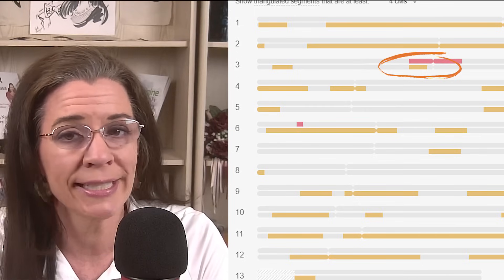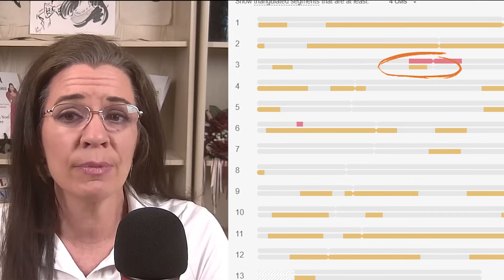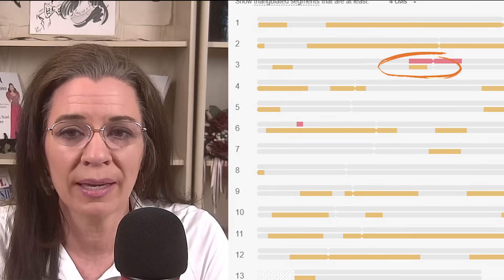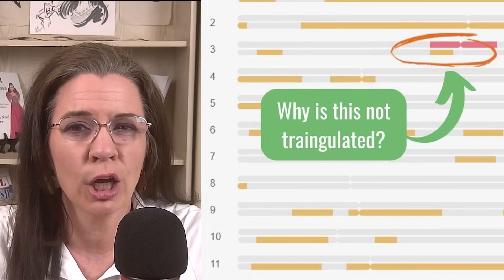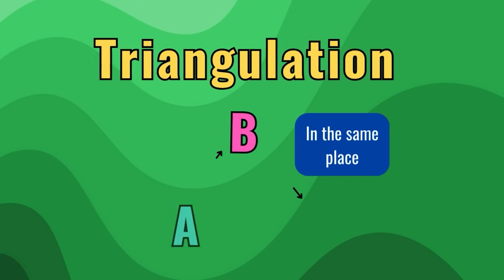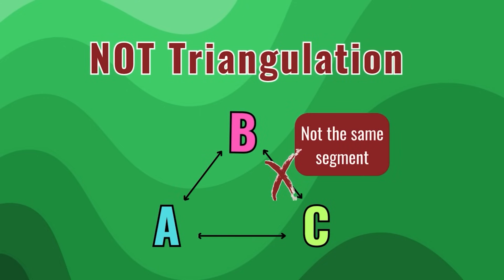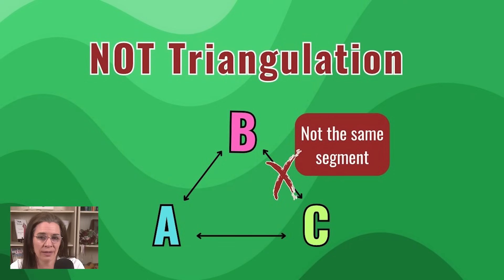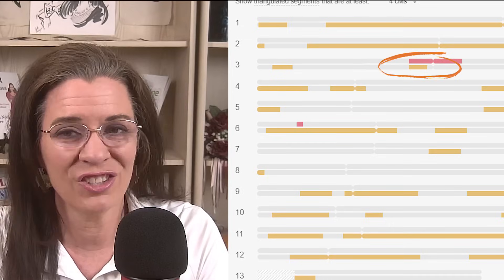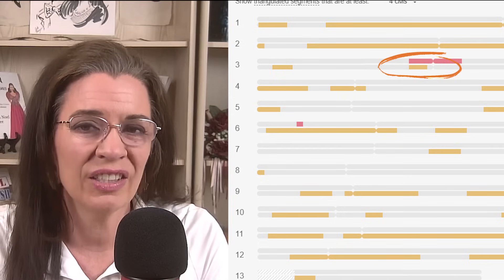Here's something that trips up a lot of people. You might open the chromosome browser, compare yourself to two matches, and see three colored bars stacked right on top of each other — same chromosome, same spot — and think this has to be a triangulated segment. But triangulation means your matches also match each other on that exact same segment, not just you. Both matches might share that same segment with you, but if they don't share it with each other, that breaks the triangulation. Unless Match A also matches Match B on that same segment, there's no triangulation.